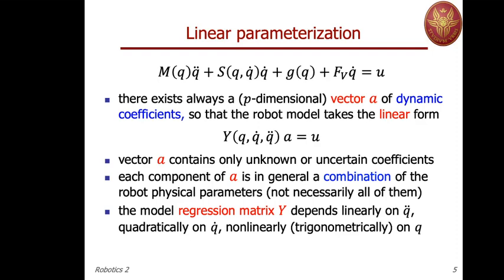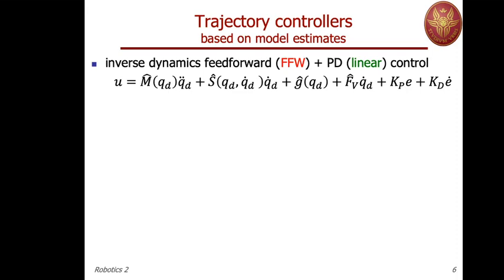The regression matrix has three types of arguments: it depends linearly on the acceleration of the robot, quadratically on joint velocities from kinetic energy terms, and if there are viscous terms there will also be a linear dependence on q-dot. Finally, it depends in a nonlinear fashion — typically on the configuration field.